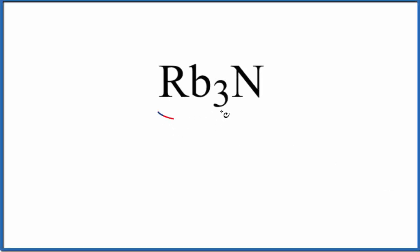Let's write the formula for Rb₃N. The first thing we need to recognize is that Rb, that's a metal, and nitrogen is a nonmetal. Metal and a nonmetal, this is an ionic compound.